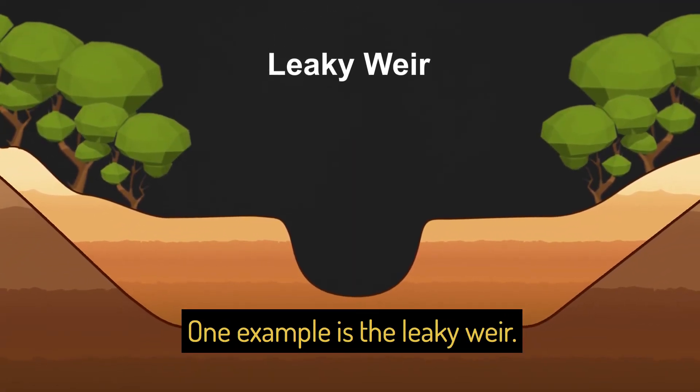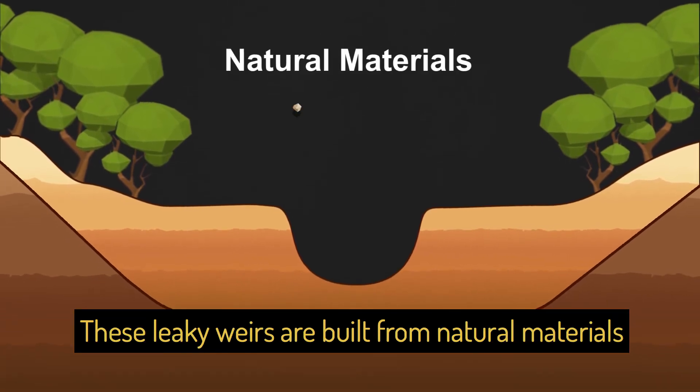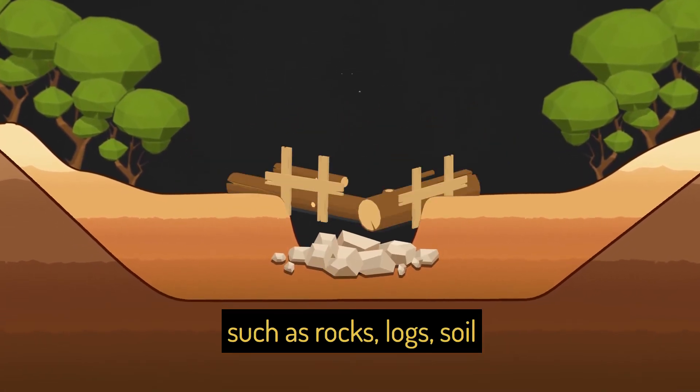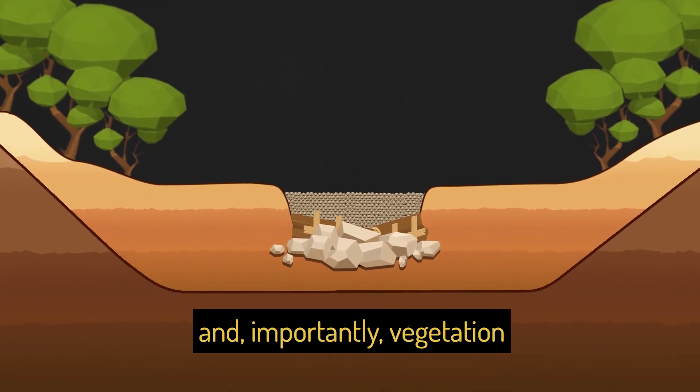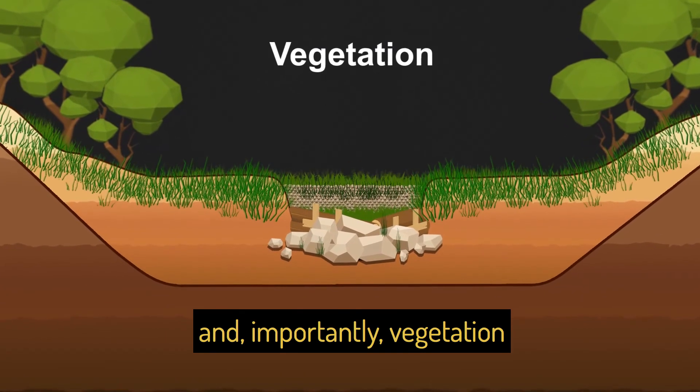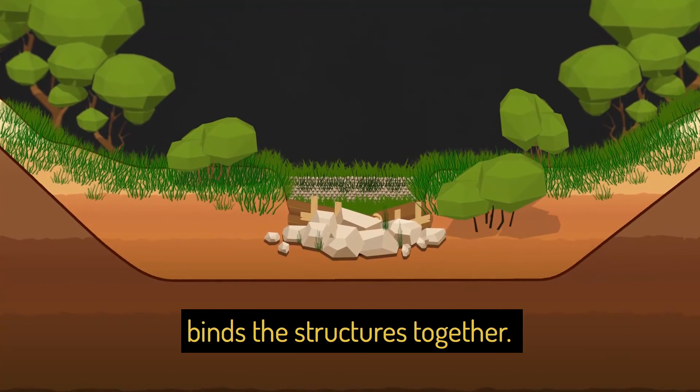One example is the leaky weir. These leaky weirs are built from natural materials such as rocks, logs, soil and importantly vegetation, which among other things binds the structures together.